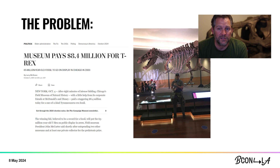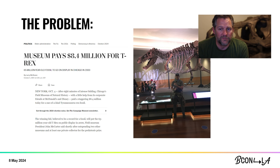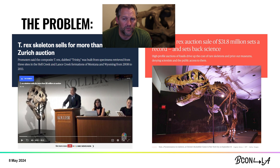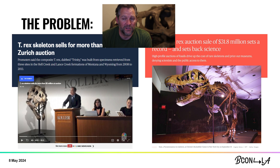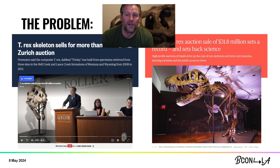Sue, the T-Rex that's on display in the Chicago Field Museum, set a dangerous precedent in the year 2000 when she sold at auction for over 8 million dollars. The price was covered by a variety of donors including Ronald McDonald House and Disney. Since Sue, the prices have just continued to increase dramatically. Another specimen, Stan, recently sold for 31.8 million dollars. Museums of course can't afford these prices for individual specimens. So these incredibly rare, one-of-a-kind fossils are increasingly going to wealthy and often anonymous private collectors.